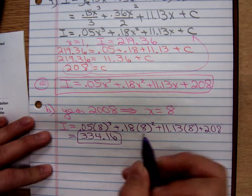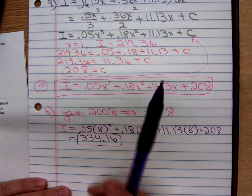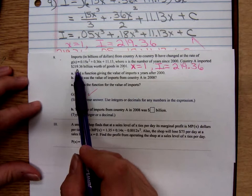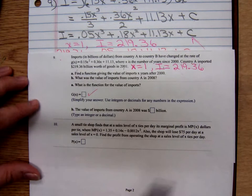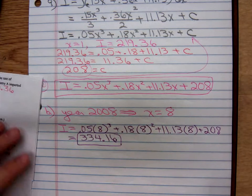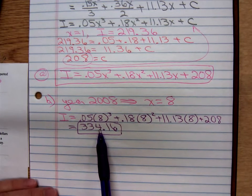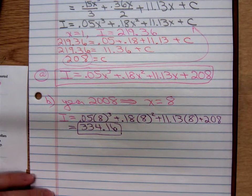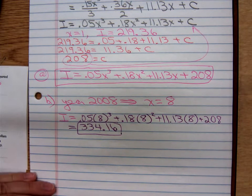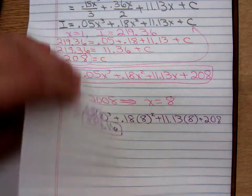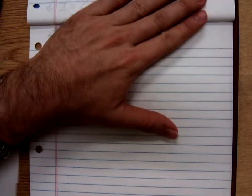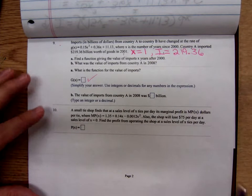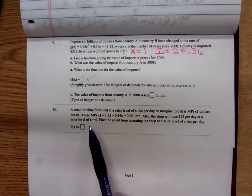So it started off in 2001, the imports were $219.36 billion, and in 8 years' time, they were up to $334.16 billion. So that country's increasing the value of their imports, which is either a good thing or a bad thing, depending on which side you're looking at. And part B.